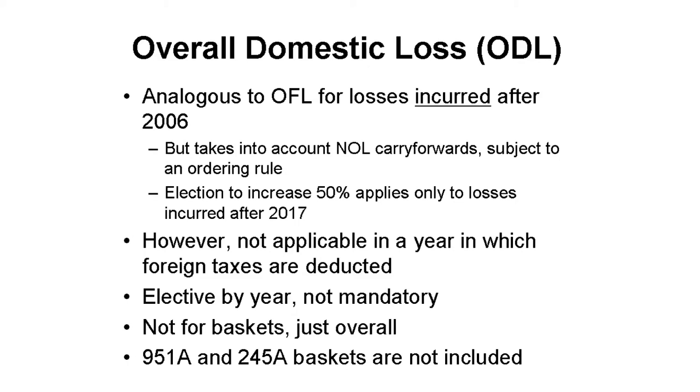The effect of the basket and overall loss resourcing is to limit foreign source taxable income to the same as it would have been on a cumulative basis. Remember, this only impacts the foreign tax credit limitation, not taxable income. The third resourcing rule is a bit different still: where there was a domestic loss incurred after 2006 that reduced foreign source taxable income, the taxpayer can elect to treat future domestic source income as foreign source.